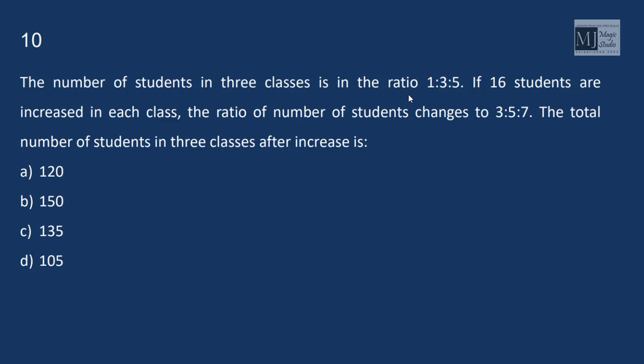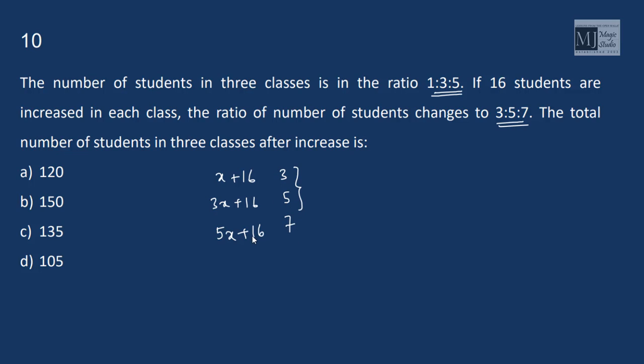The number of students in 3 classes are in the ratio 1:3:5. 16 students are increased in each class. Now we have x plus 16, 3x plus 16 and 5x plus 16. Now the new ratio is 3:5:7. We can take any 2 and solve for x. 5x plus 80 equals 9x plus 48, 4x is 32, x equals to 8.